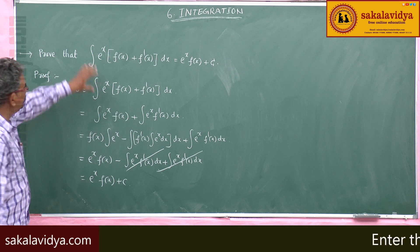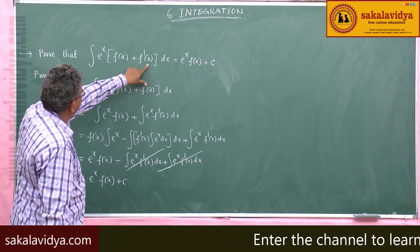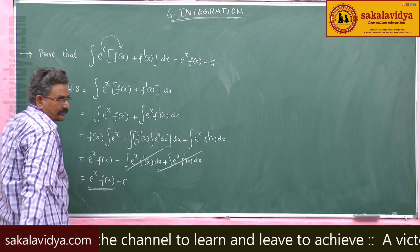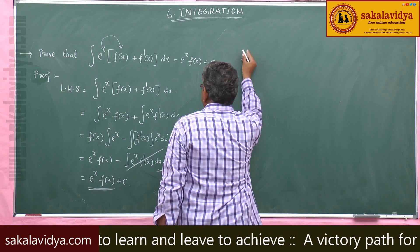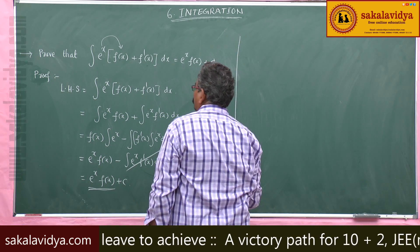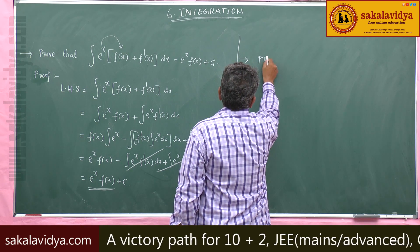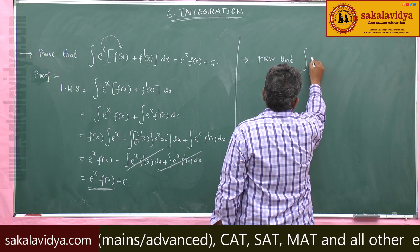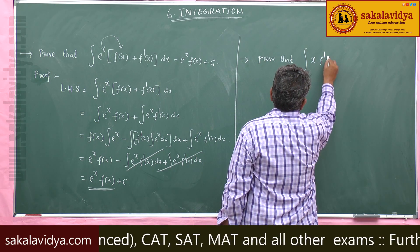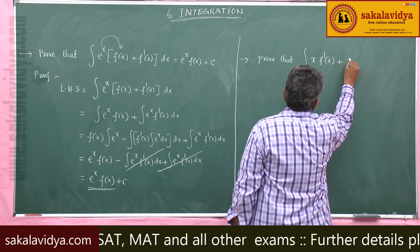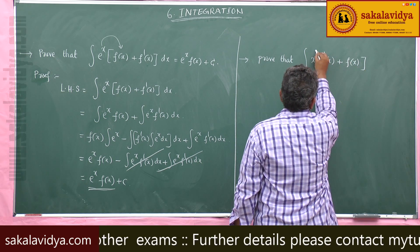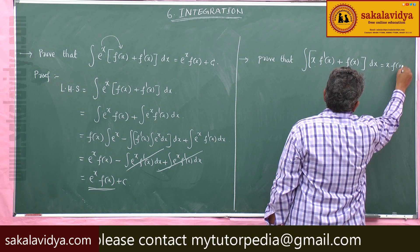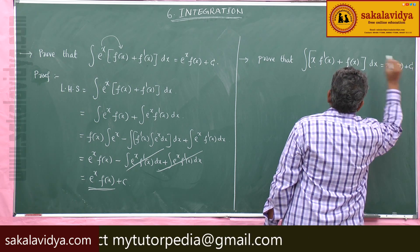Whenever the integral has e power x multiplied by a function and its derivative, you get e power x into f(x). One more result: integral of x f dash x plus f(x) dx is equal to x f(x) plus constant of integration.